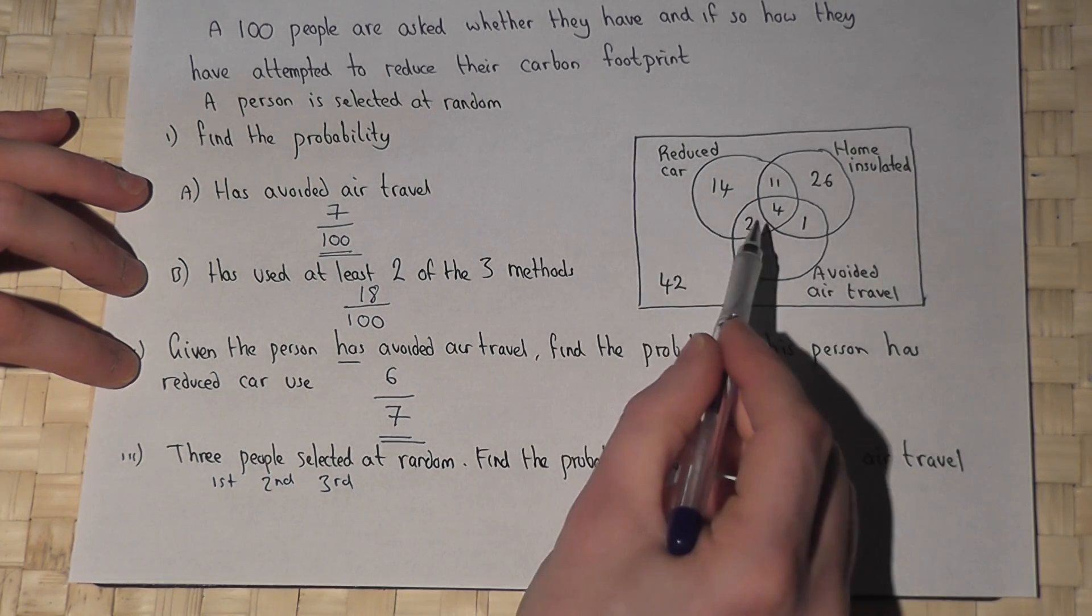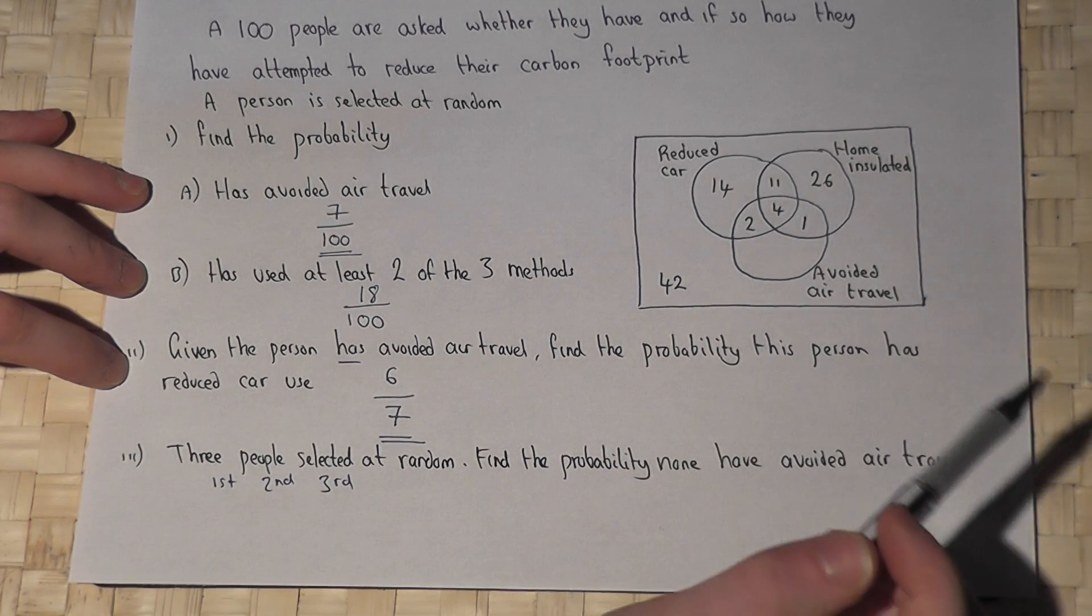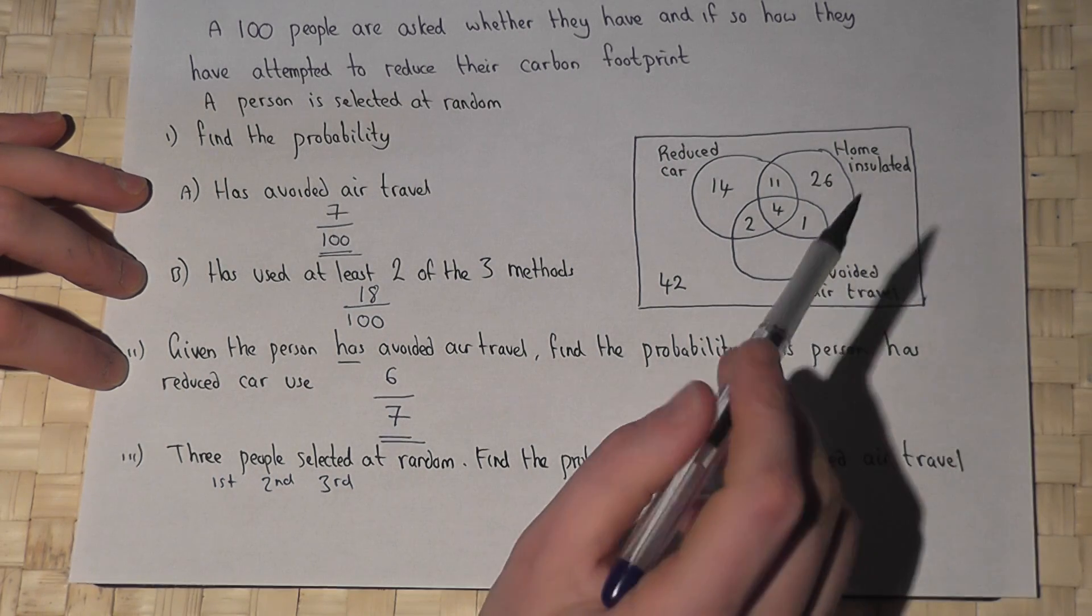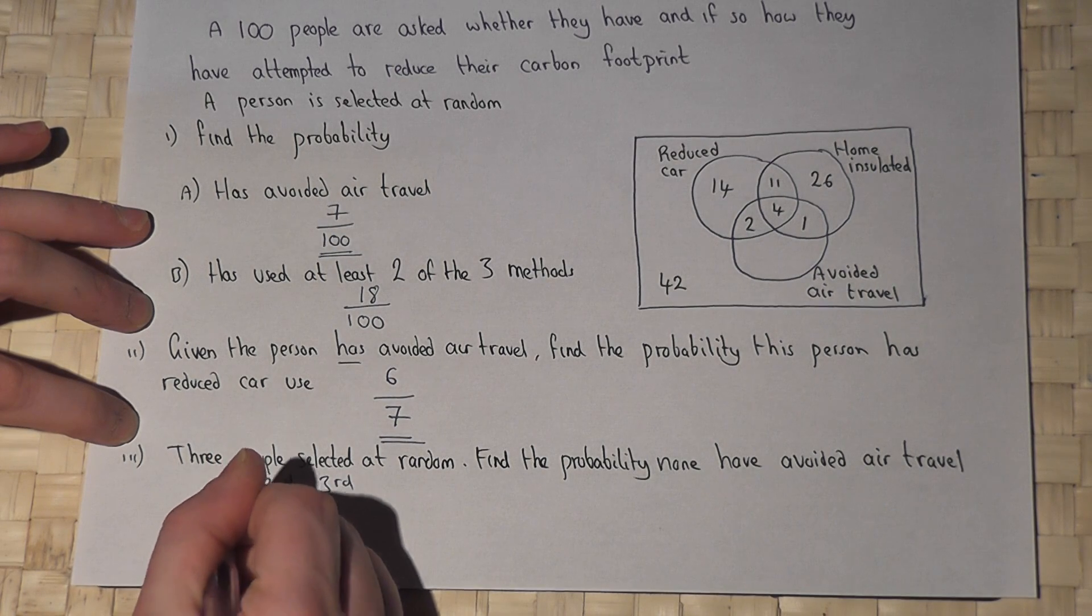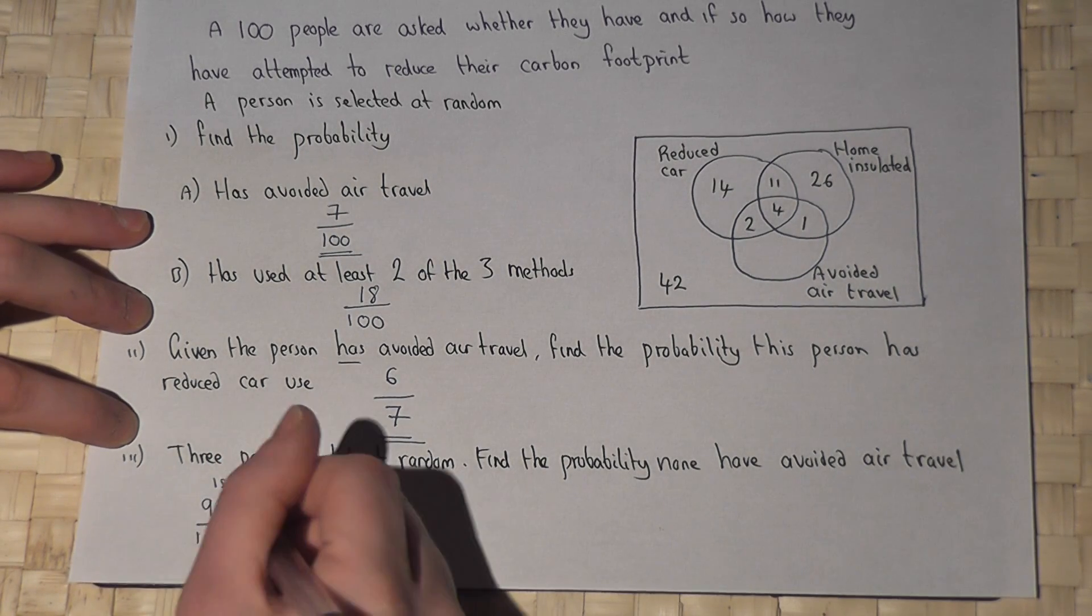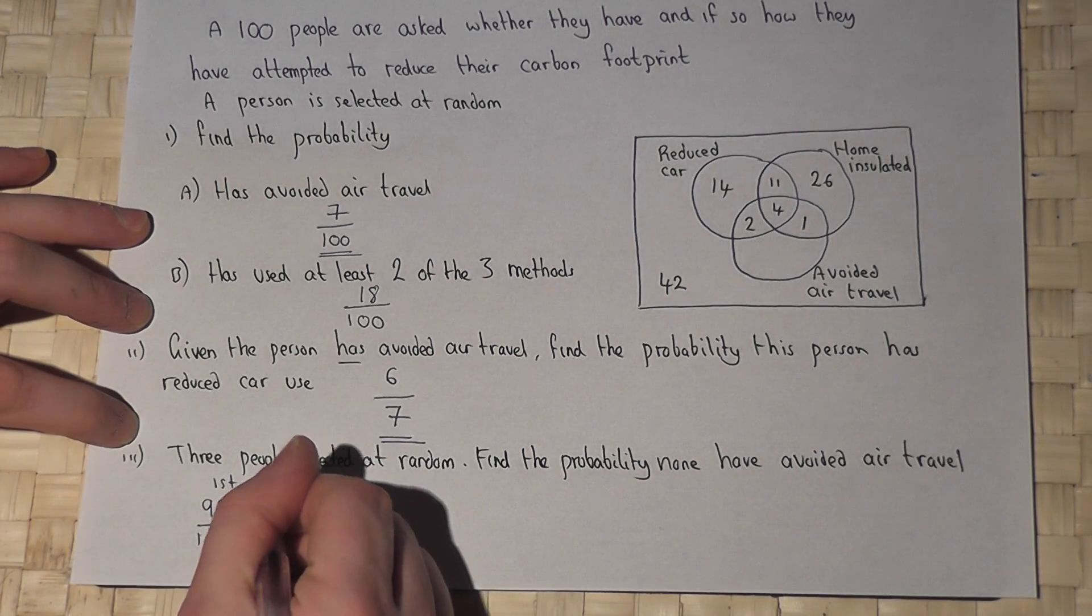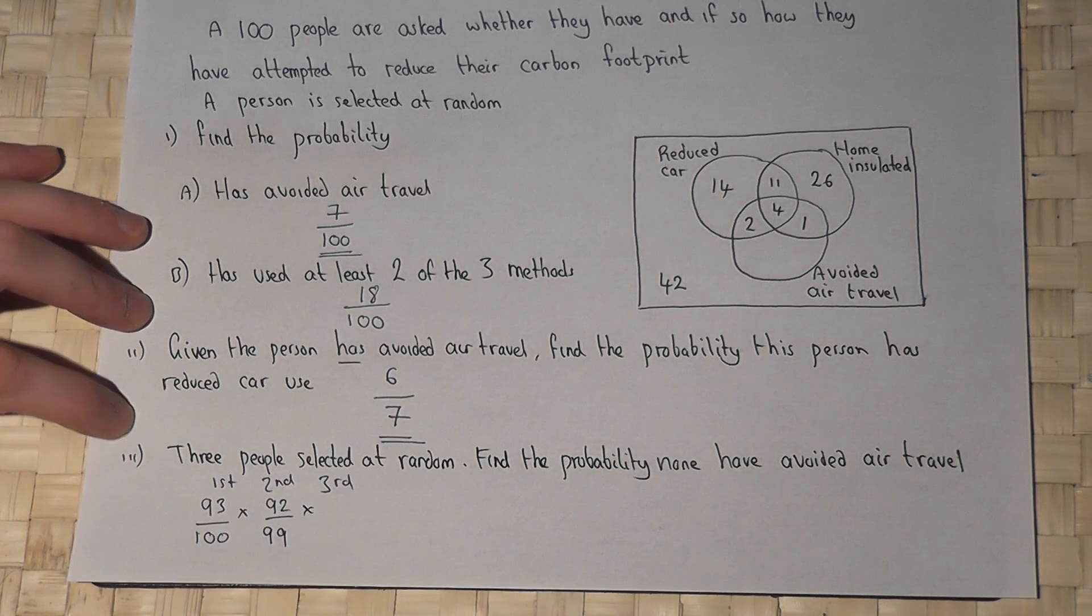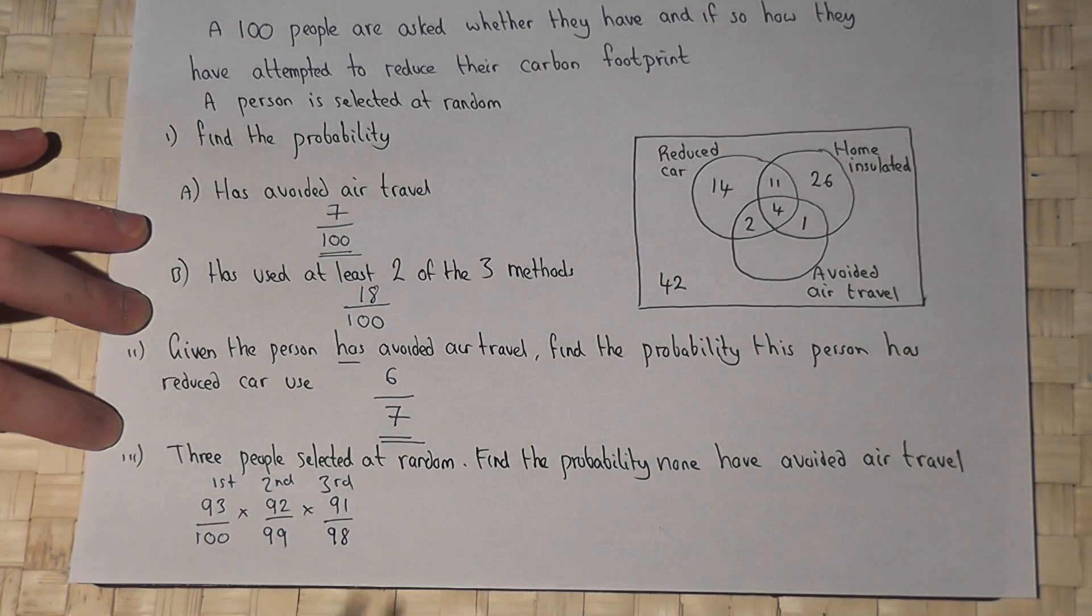When we first get the person out of the group, there are 100 take seven, 93 people who had not avoided air travel. So for the first person it's 93 out of 100. But once that person's gone, we pick them out of the group, there's then 92 out of 99 people left. But once that second person has been picked, there's 91 out of 98 people.